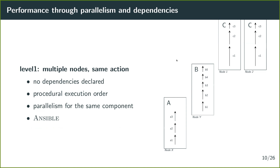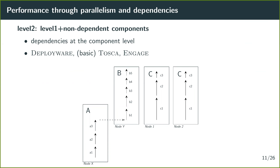The second level improves granularity by expressing dependencies at the component level. Instead of a procedural order, you declare: B depends on A. From this, you deduce that C does not depend on B, so you can run simultaneously the deployment of B, C on node one, and C on node two. This is the level offered by Deployware, basic Tosca, and Engage.